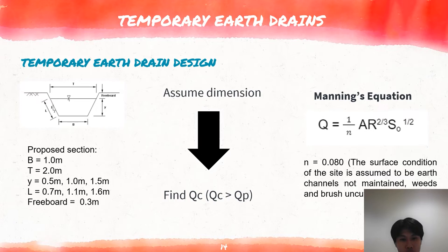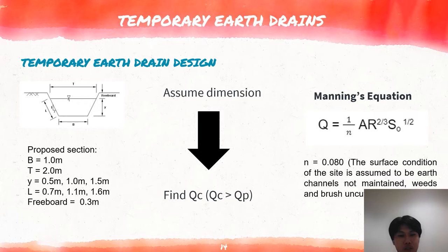We decided to take n equals 0.08 as the surface condition of design is assumed to be earth channels not maintained, with weeds and brush cut. For A, which is the cross-section area of the proposed temporary earth drain; for R, which is the hydraulic radius; for S0, which is the bed channel slope — as a result, capacity flow can be calculated.